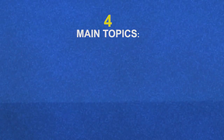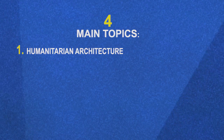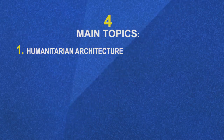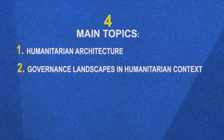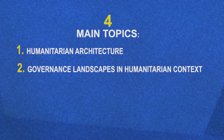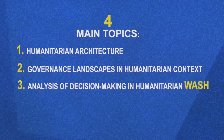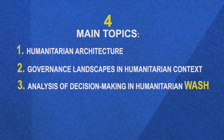The course is divided into four main topics. First, humanitarian architecture, where we discuss the core actors of the humanitarian sector as well as the challenges in coordination and providing relief. Second, governance landscapes in humanitarian context, covering different approaches such as multilevel governance and governance mechanisms. Third, analysis of decision making in humanitarian WASH, discussing in detail how decision making works in practice and the main challenges actors face.